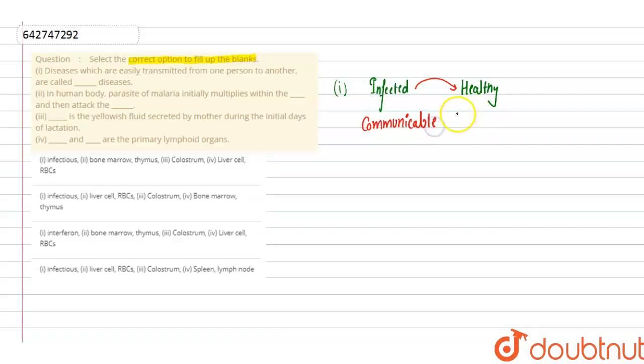If you see the examples: common example is typhoid, then there is pneumonia that is transmitted through air droplets from the infected person to the healthy person. Similarly typhoid with contaminated food. So all these are infectious diseases or communicable diseases.